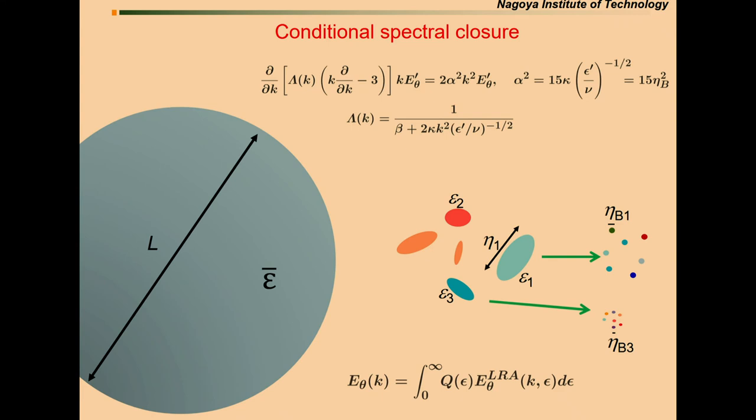Can we do the similar business for the spectral theory? Because we are considering the scales are far below the Batchelor scale, which is far below the Kolmogorov scale. Therefore, scale separation. Then, we consider the equation, which is obtained by the spectral closure as the equation conditioned by epsilon. By solving this equation, we have some scalar spectra in far diffusive range, which is Gaussian decay. Then, we take the ensemble average over the distribution of epsilon.